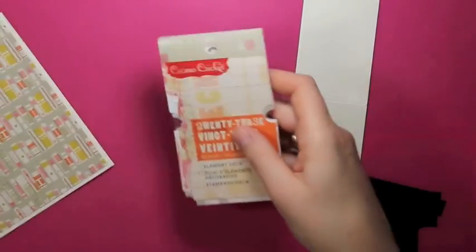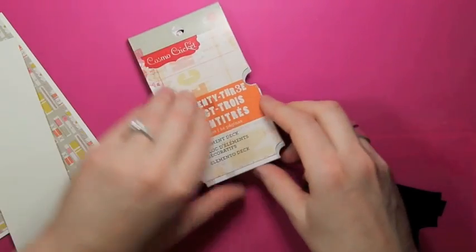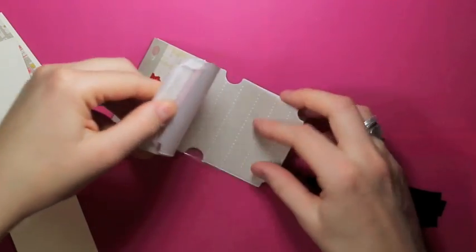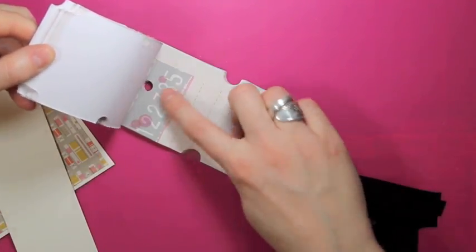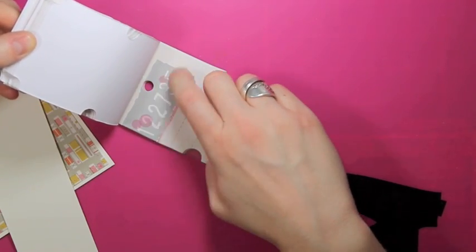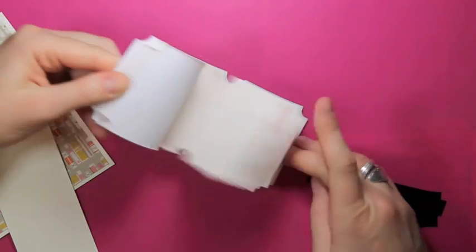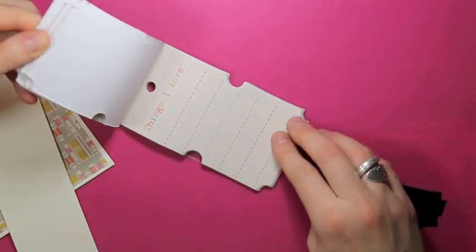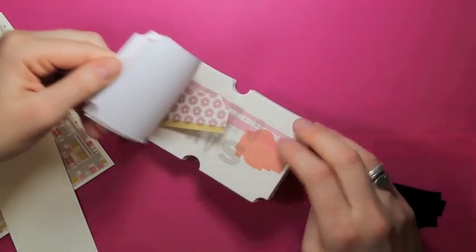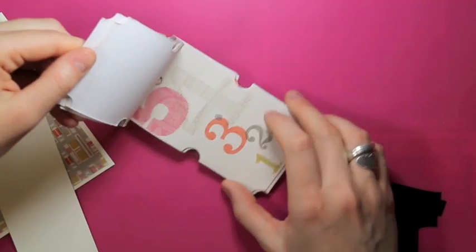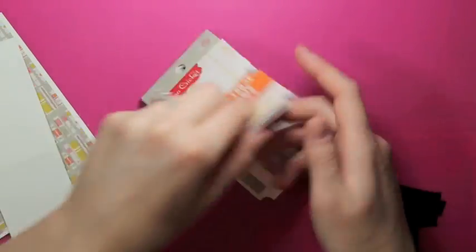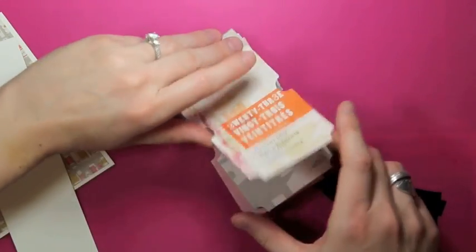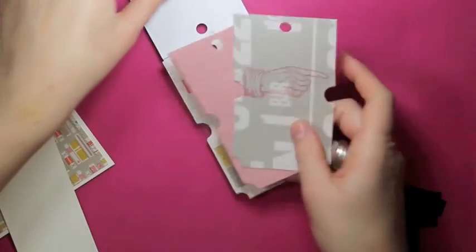Another really neat thing that's part of the 23 collection from Cosmo Cricket are these element decks. And basically they are just packed with all kinds of different designs. They kind of have a ticket feel to them, but then they also have this circular cutout at the top, so you could use them for tags. Every page is a different design, and it's just a really neat new product.